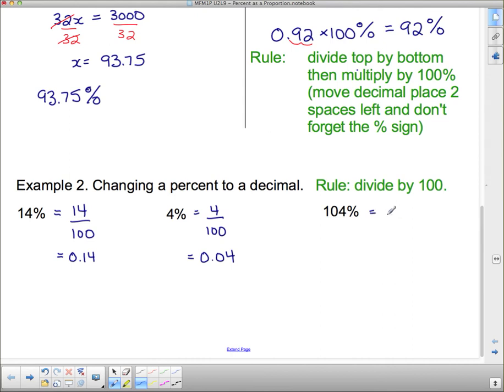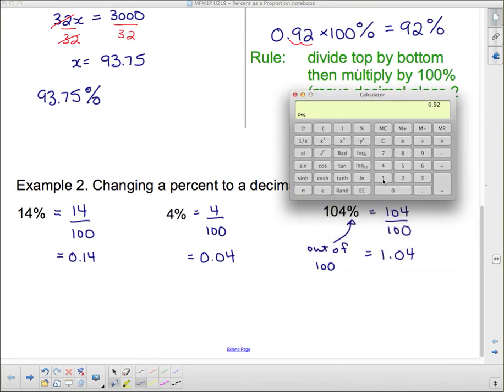This one, 104 over 100. Remember that's what percent means, out of 100. Notice that 104 is bigger than 100, which means we're going to have a whole number when we change it into a decimal. This is going to be 1.04. If you can't divide by 100 in your head, you do have the calculator, so you can do 104 divided by 100 and see that you get 1.04.